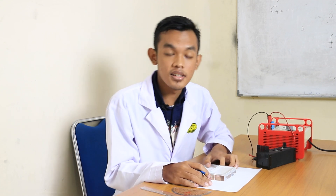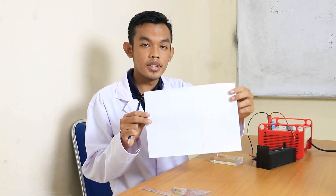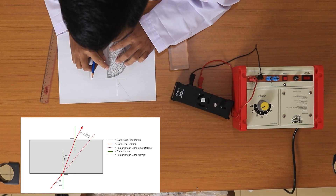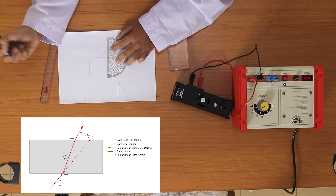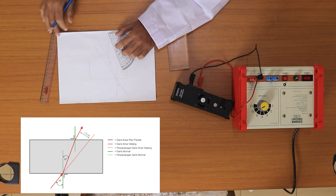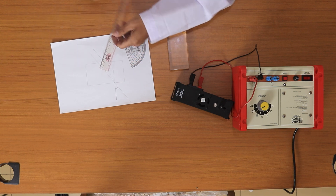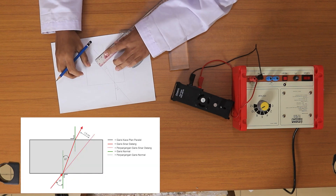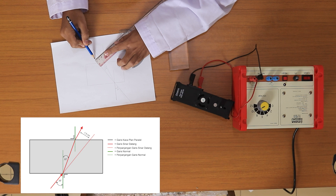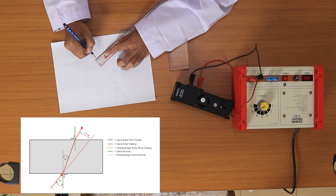Sekarang kita akan mengubah besarnya sudut datang. Tadi kita menggunakan 30 derajat, sekarang kita ubah ke 35 derajat. Data sudah saya ambil. Sudut biasnya dapat kita amati besarnya 22 derajat. Kemudian kita hitung pergeserannya, dapat kita amati pergeserannya yaitu 1,5 cm.